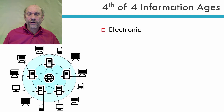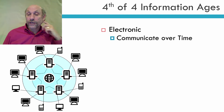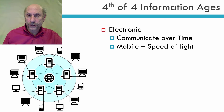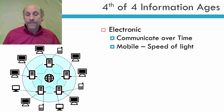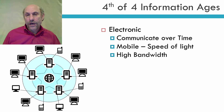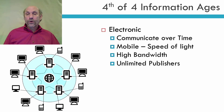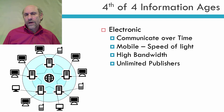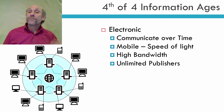The fourth information age is the electronic age. Again, you can still communicate over time — I'm putting together this video and you can watch it at some later time. But it's much more mobile now; I'm able to send this out at the speed of light. Very high bandwidth. We have a lot more information that we can present in any given amount of time. And here's an important point especially for the role of government: essentially you have an unlimited number of publishers. I am a publisher. Everybody on the internet can be a publisher. So if the government or the community wants to control publishing, it's going to be much more difficult.